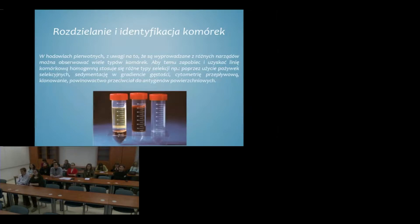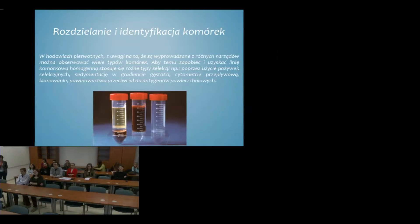W hodowlach pierwotnych, z uwagi na to, że są wyprowadzane z różnych narządów, można obserwować wiele typów komórek. Chcąc hodować tylko jeden typ i wygenerować homogenną populację komórek, stosuje się różne typy selekcji — na przykład poprzez użycie pożywek selekcyjnych, sedymentację w gradiencie gęstości, cytometrię przepływową, klonowanie oraz powinowactwo przeciwciał do antygenów powierzchniowych.